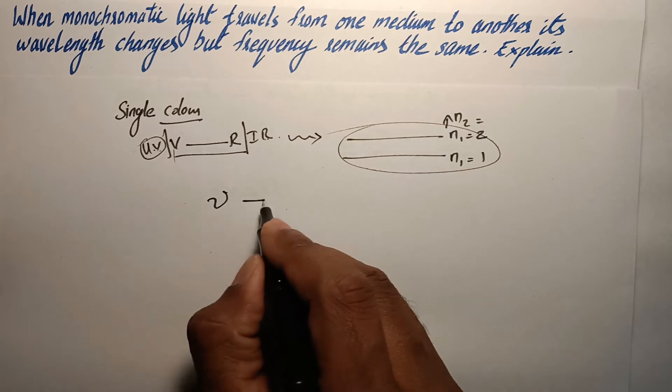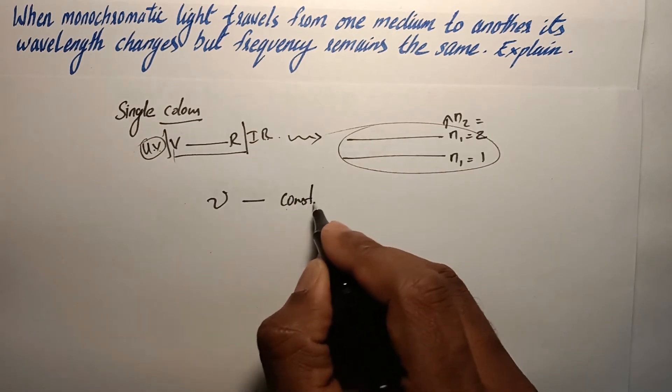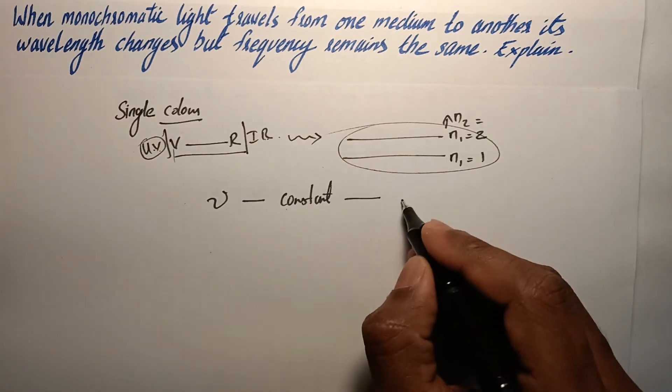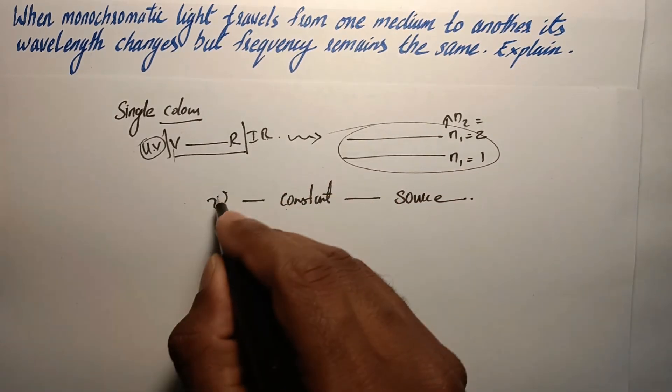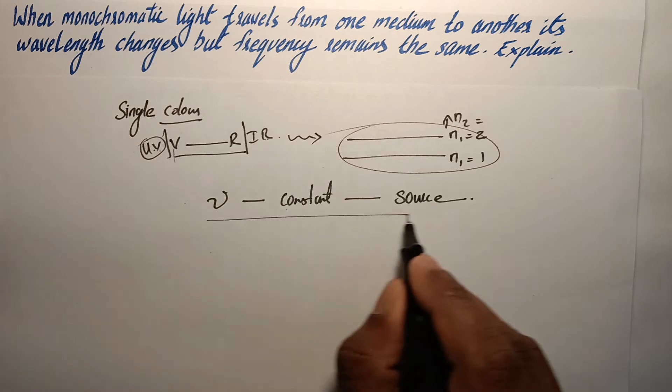So the frequency is a constant because it is set by the source. So if the source is changed, then only the frequency will change. Otherwise, it remains constant.